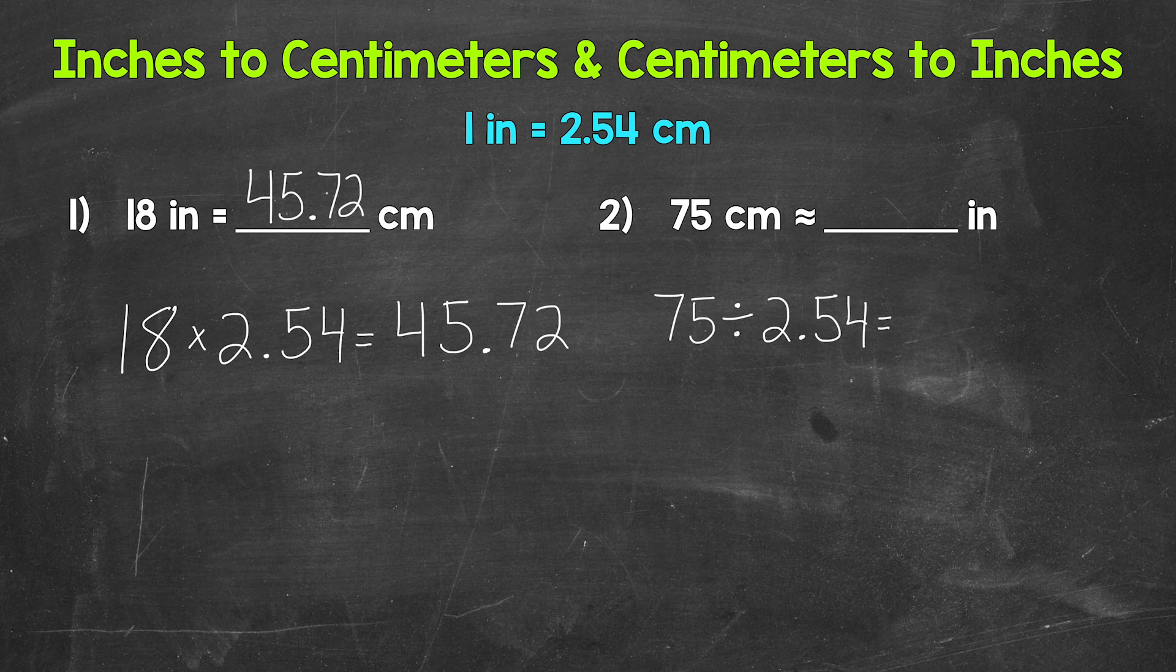So when we go from centimeters to inches, we divide by 2.54. Now 75 divided by 2.54 gives us 29.527, and that decimal continues on. So I'm just going to write it to the thousandths place. That way we can round it to the hundredths.